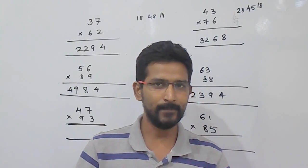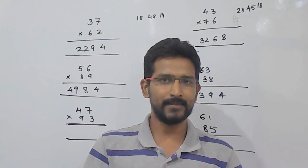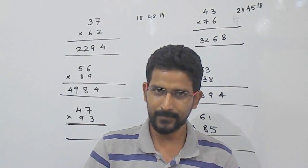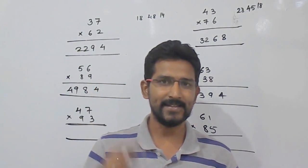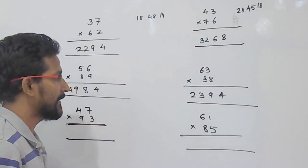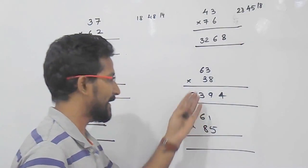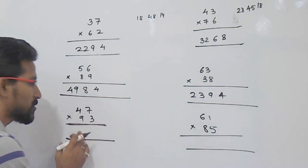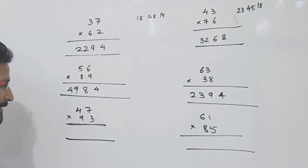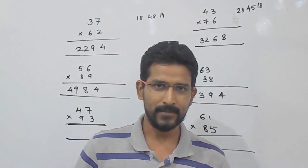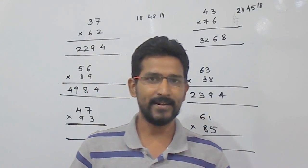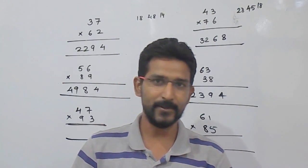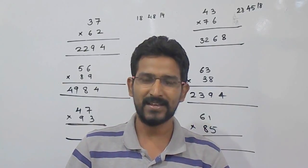So, what you have to do? You have to multiply the unit place values, and then cross multiply the tens place and unit place of the values and add them, and then next step you have to multiply the tens place value. This is how we can multiply any 2-digit number in just few seconds without writing many steps that we follow in normal method. You can try out these two examples: 47 into 93 and 61 into 85, by the method we have discussed, and you can write your answer in the comment section. Hope you have understood this calculation. By taking more number of examples, your speed is going to increase and it will save a lot of your time in your examination. Thank you.